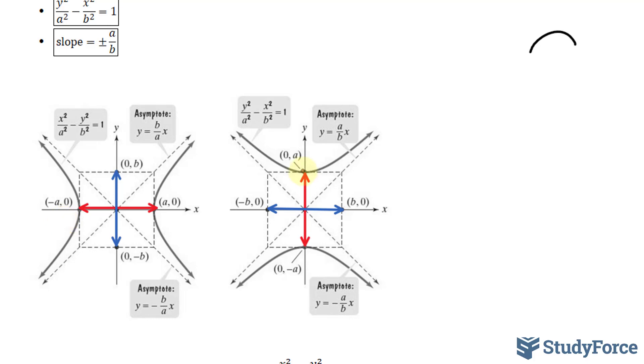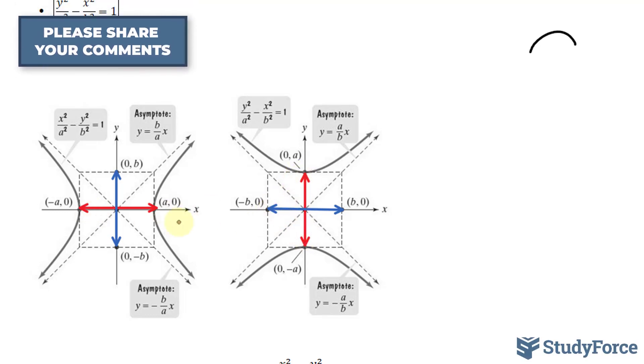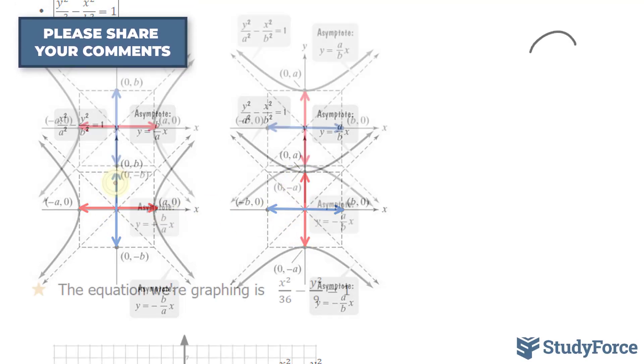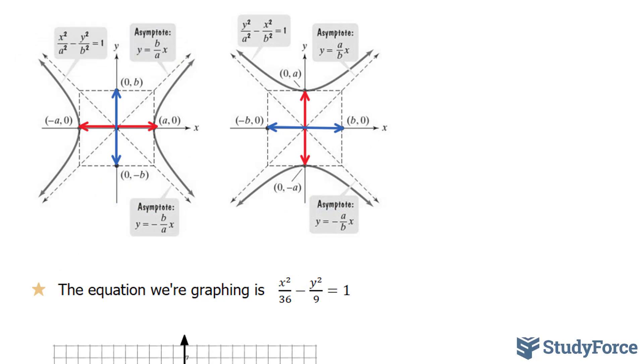Whereas when it's vertical, the vertices are on the vertical plane. What you see in red are the transverse axes. And what you see in blue are the conjugate axes. Keep that in mind.